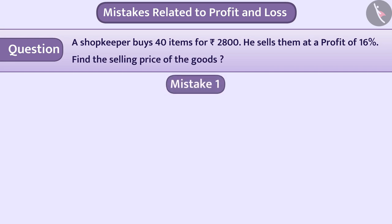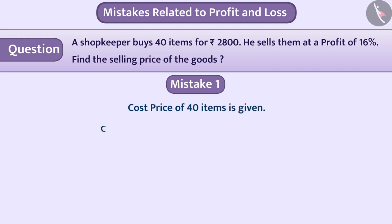Mistake 1: Some children do not understand the question properly. Here, the cost price of 40 items is given as ₹2800. But they mistakenly think that the cost price of 40 items equals 40 × ₹2800 = ₹1,12,000. This is a misunderstanding.